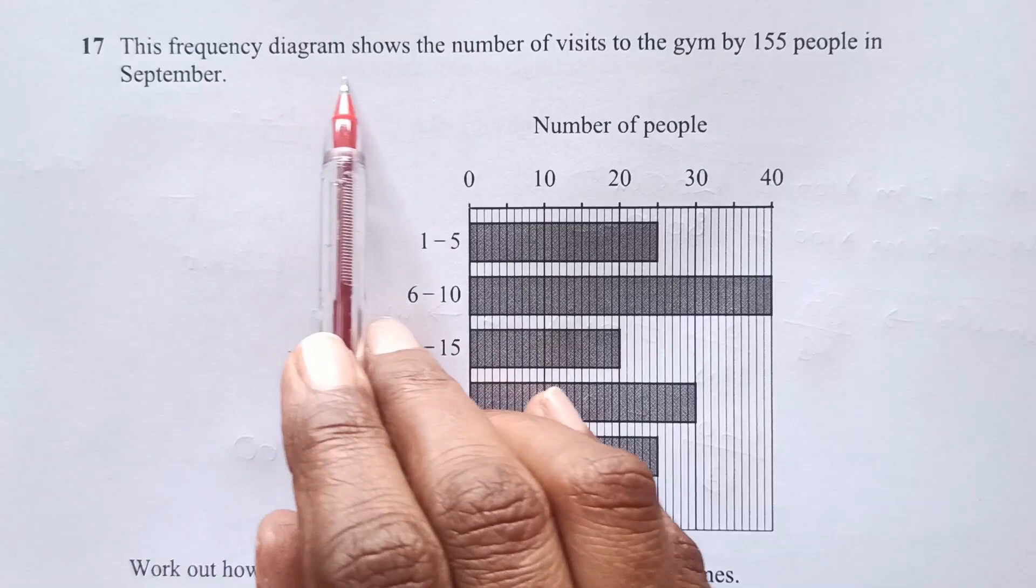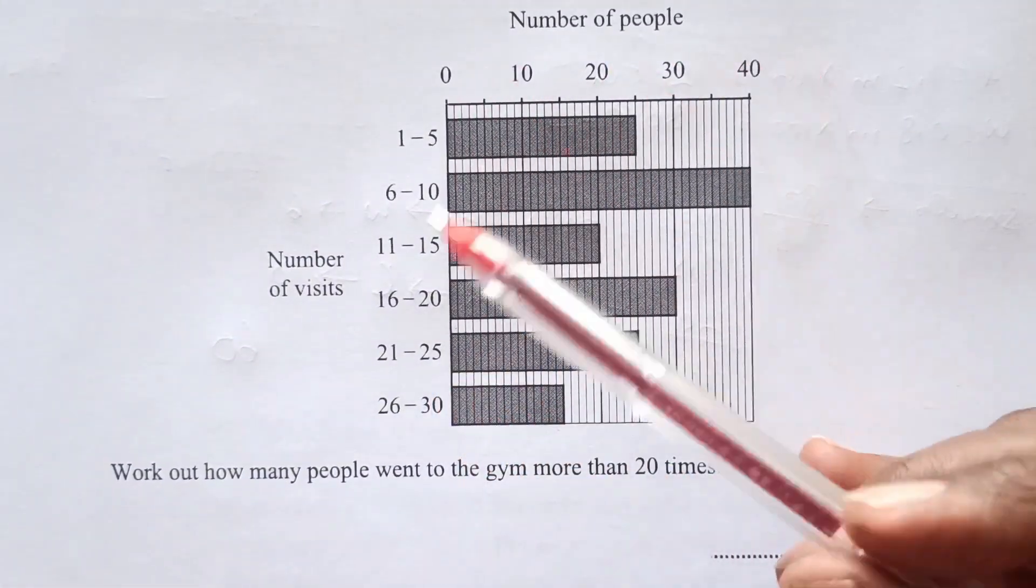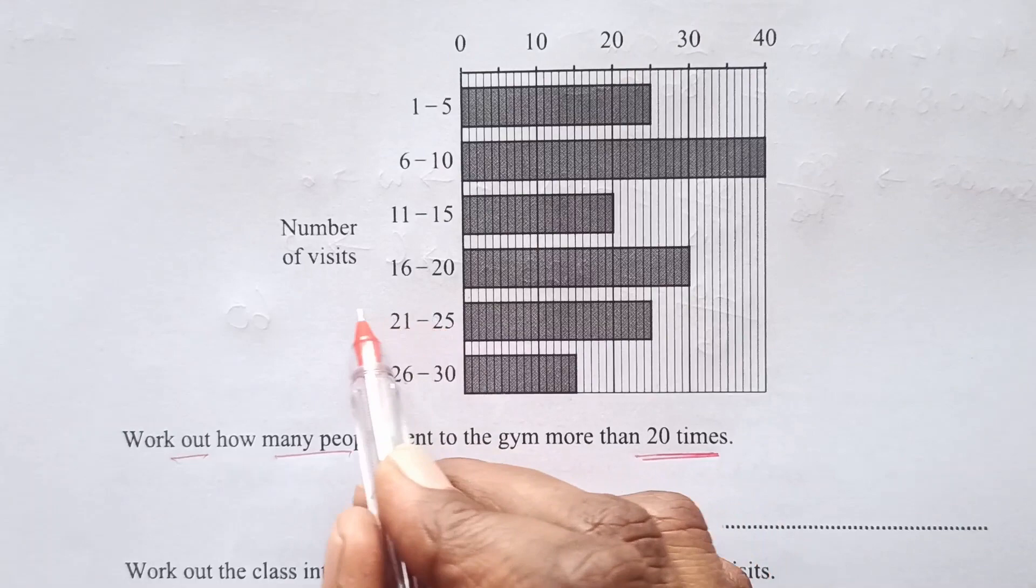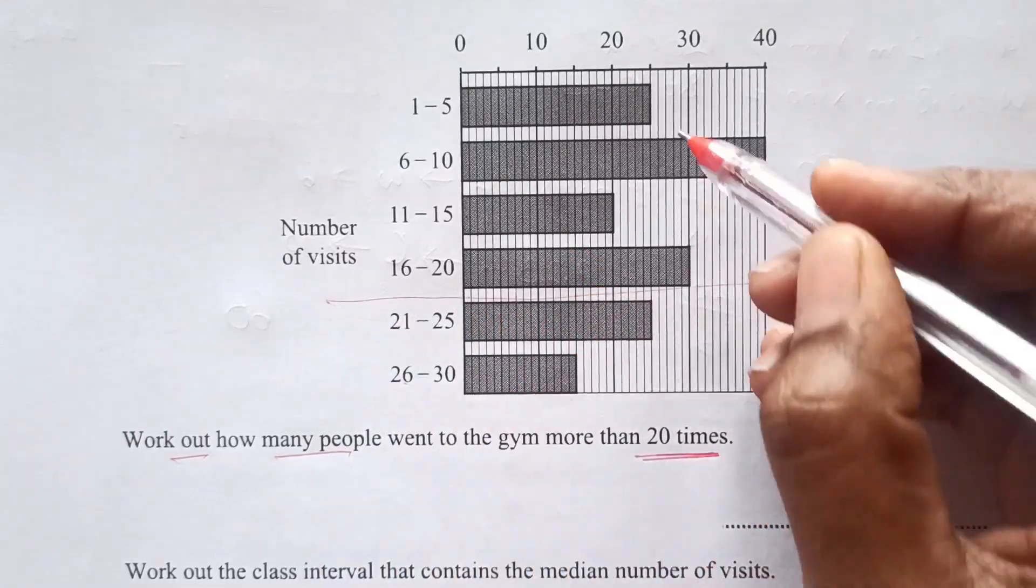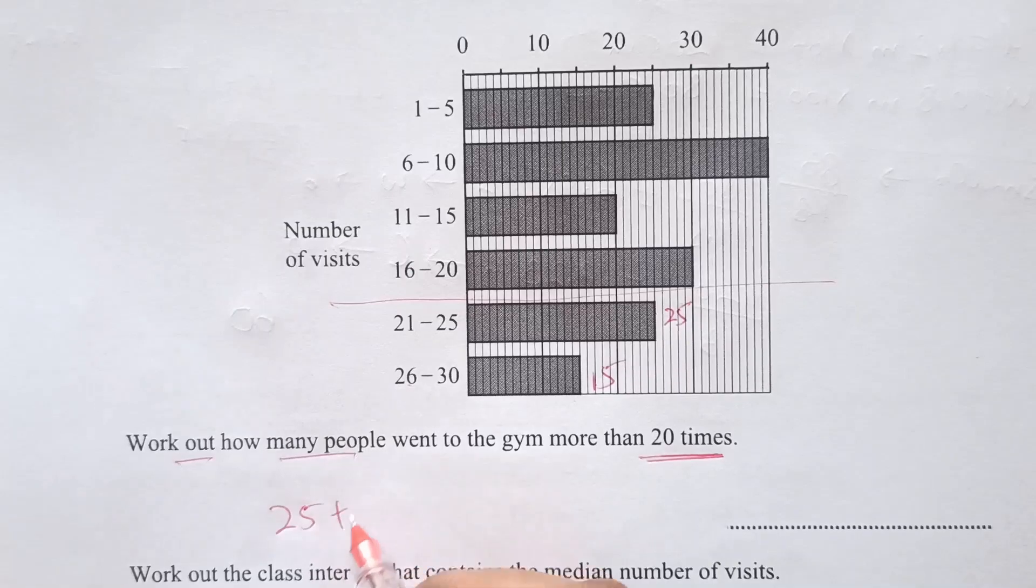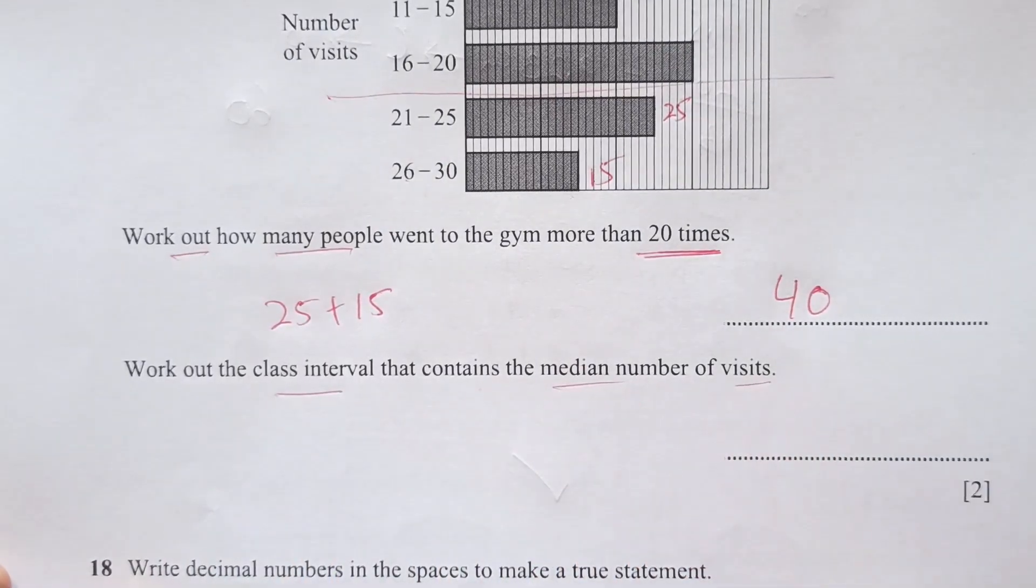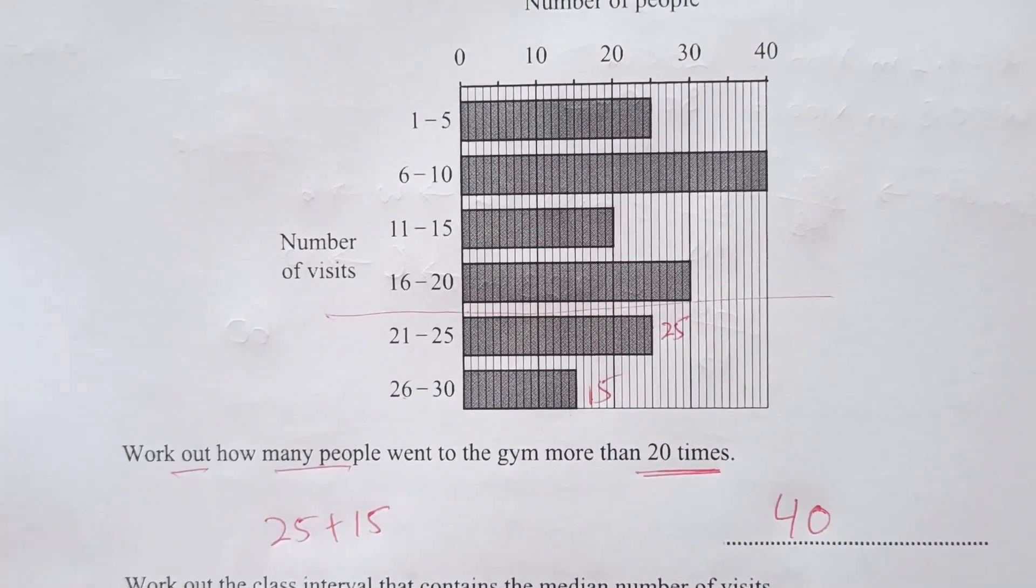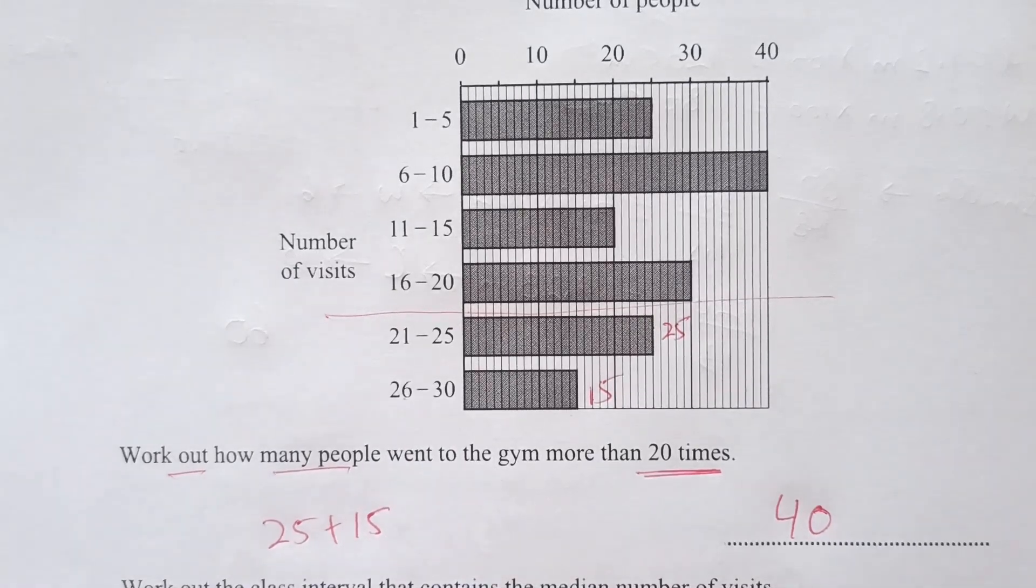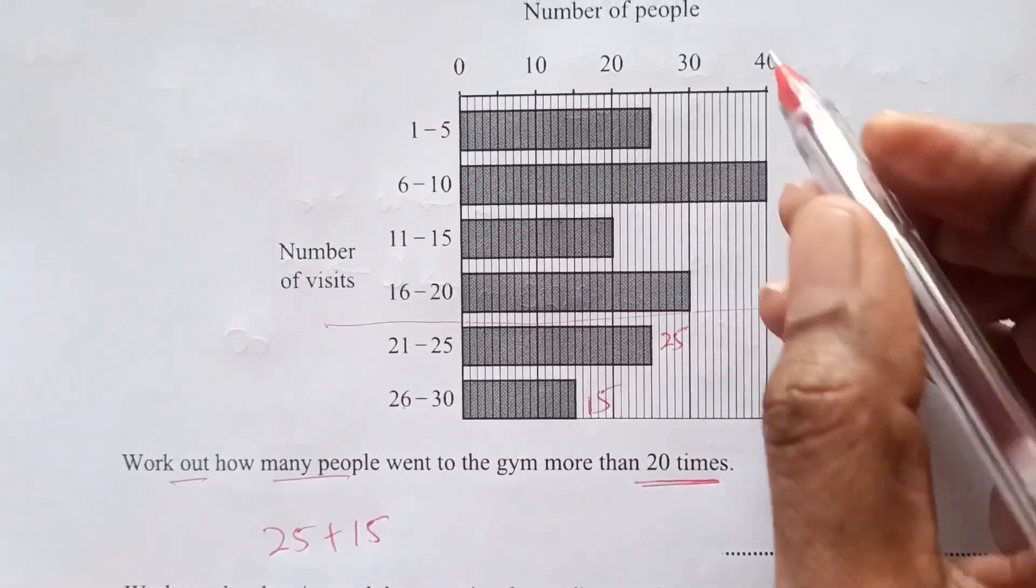Question 17. The frequency diagram shows the number of visits to the gym by 155 people in September. We have number of people this side and number of visits here. Work out how many people went to gym more than 20 times. More than 20 times is above this down here. This one is 25 and this one is 15. So 25 plus 15, which is 40.